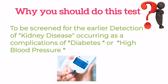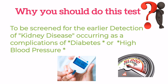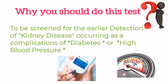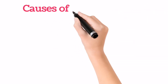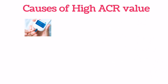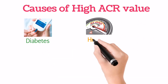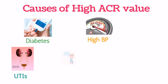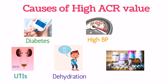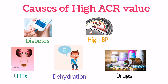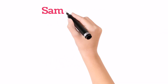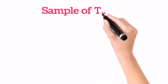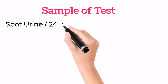Doctors usually recommend this test to find out kidney disease due to diabetes or high blood pressure complications. There are different causes of high UACR value, but the major reasons are diabetes and high blood pressure. Besides these, UTIs, dehydration, and certain drugs can also alter the UACR value.